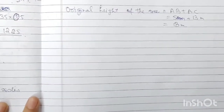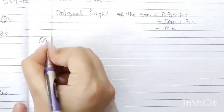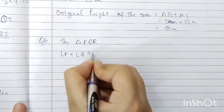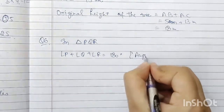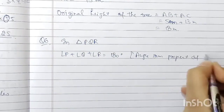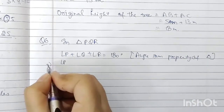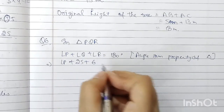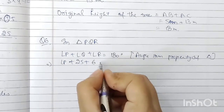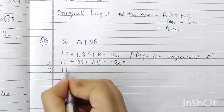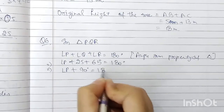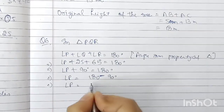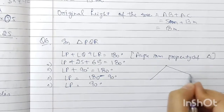In triangle PQR, angle P + angle Q + angle R = 180 degrees (angle sum property of triangle). Angle Q is given as 25 degrees and angle R is given as 65 degrees. So angle P = 180 − (65 + 25) = 180 − 90 = 90 degrees. So angle P = 90 degrees.